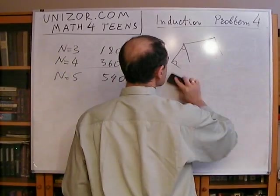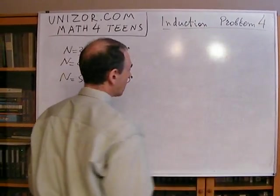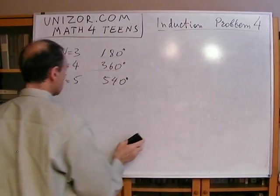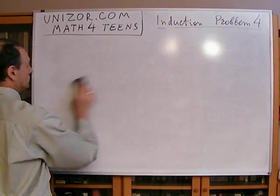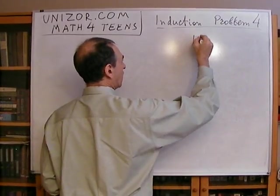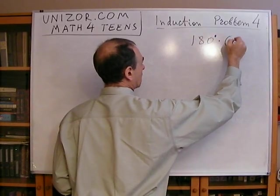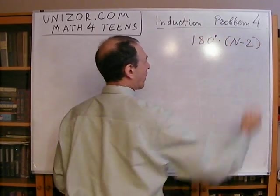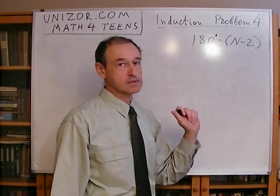So basically, this is the basis of the proof using full mathematical induction, which I'm going to introduce right now. So the formula seems to be 180 degrees times n minus 2, where n is number of sides of the polygon.